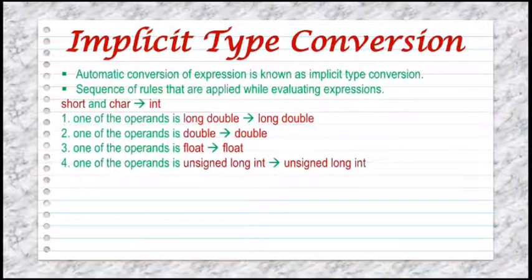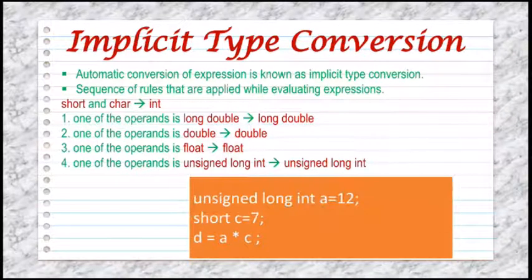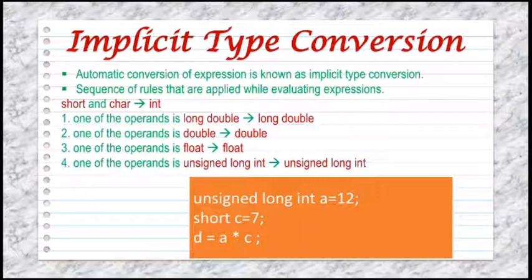Rule four: else if one of the operands is unsigned long int, the other will be converted to unsigned long int and the result will be unsigned long int. In the given example, we have declared variable a as unsigned long int and c as short. Because unsigned long int is present, a plus b will result in unsigned long int.